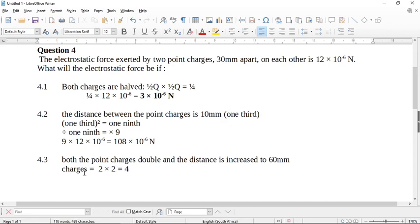And now if we have a look at the distance, what happened to the distance, the distance is double. So the distance is double. And we need to square this because it's an inverse square law, remember, so it's going to be two squared. Two squared is four.